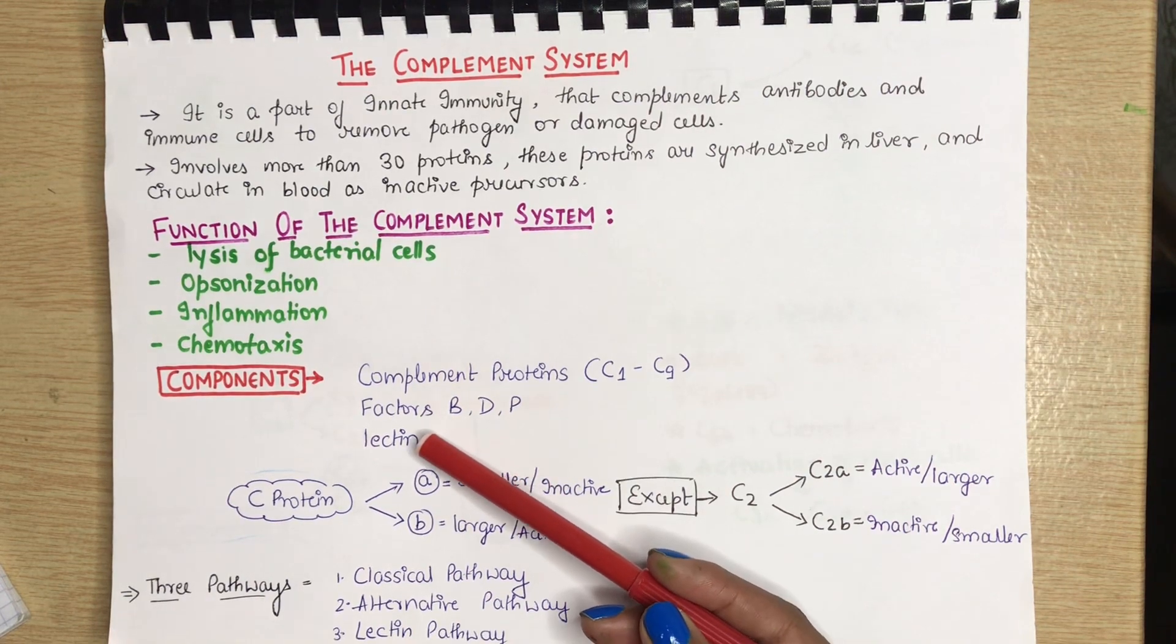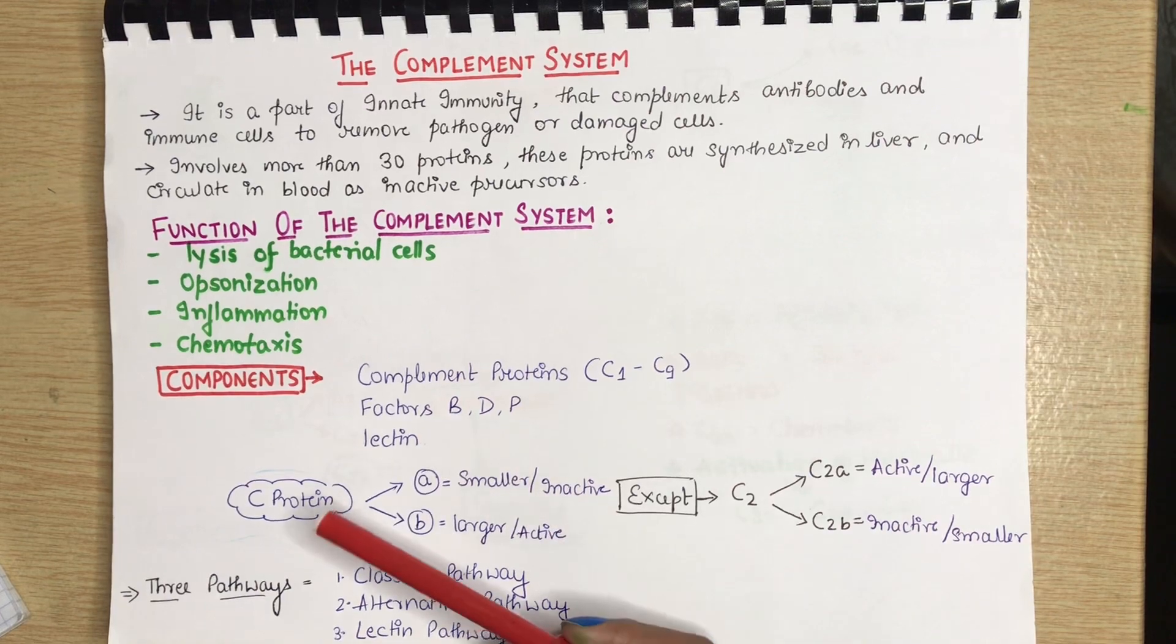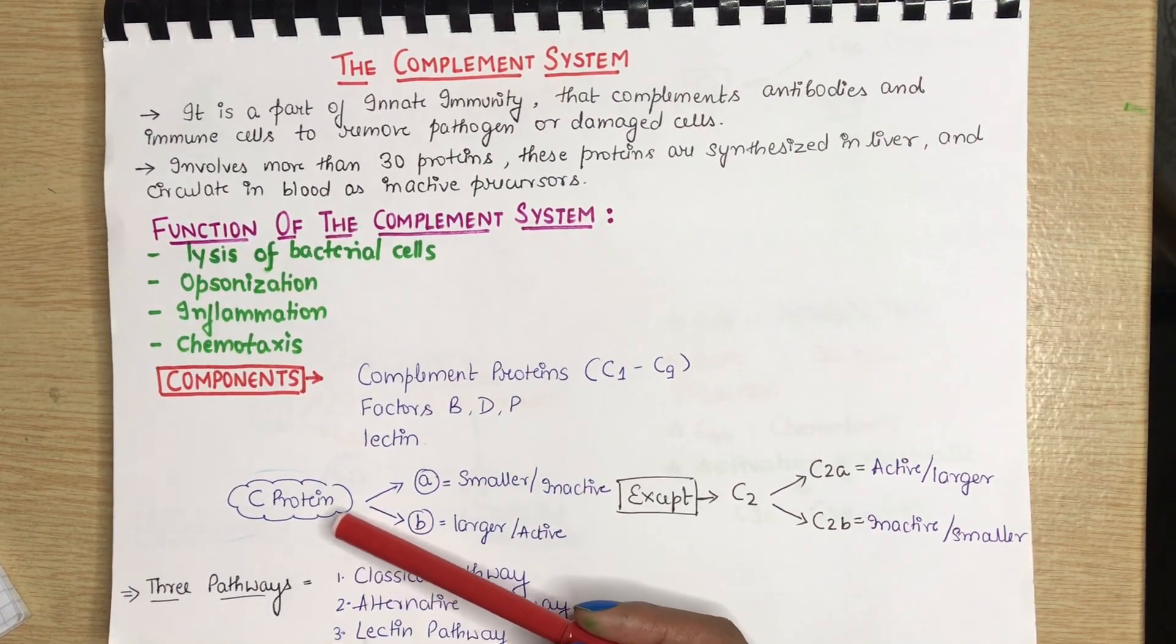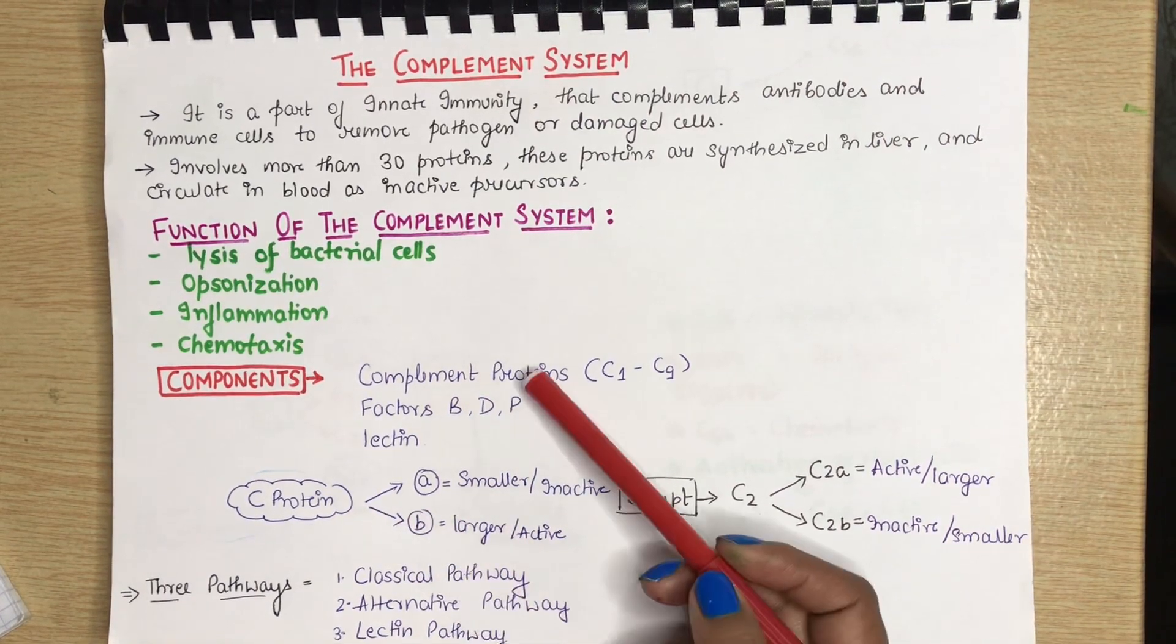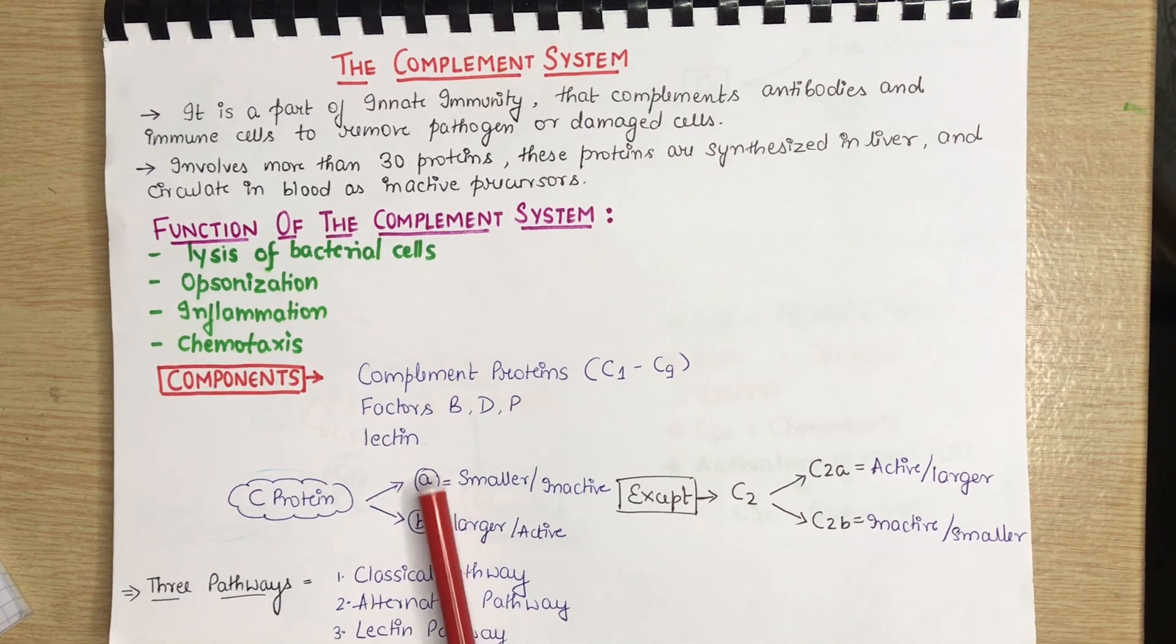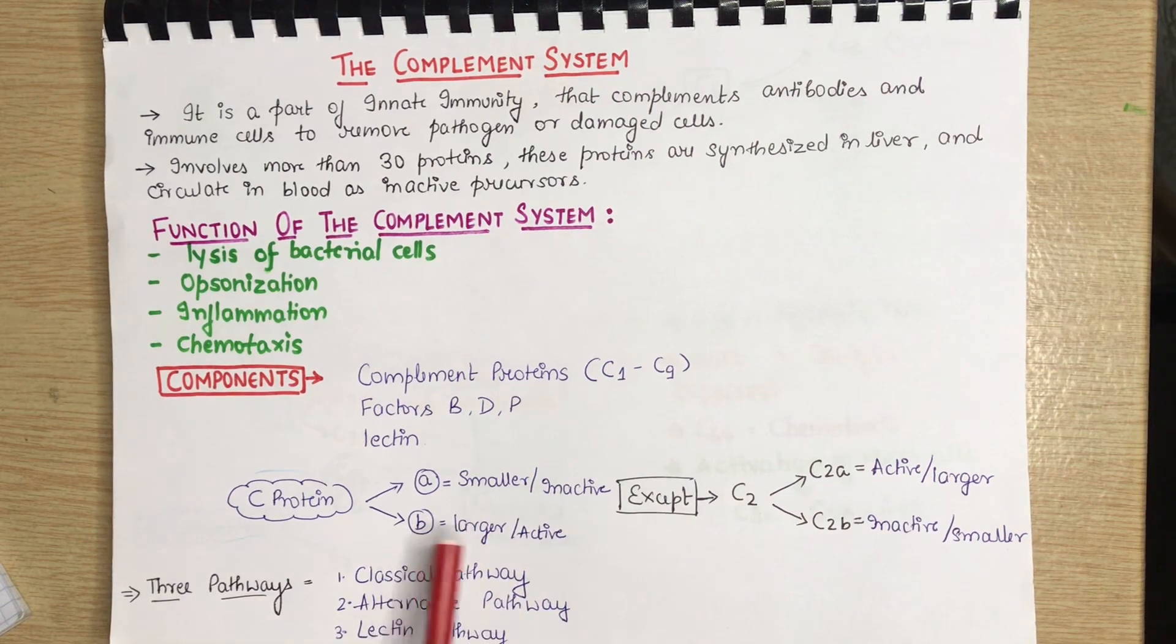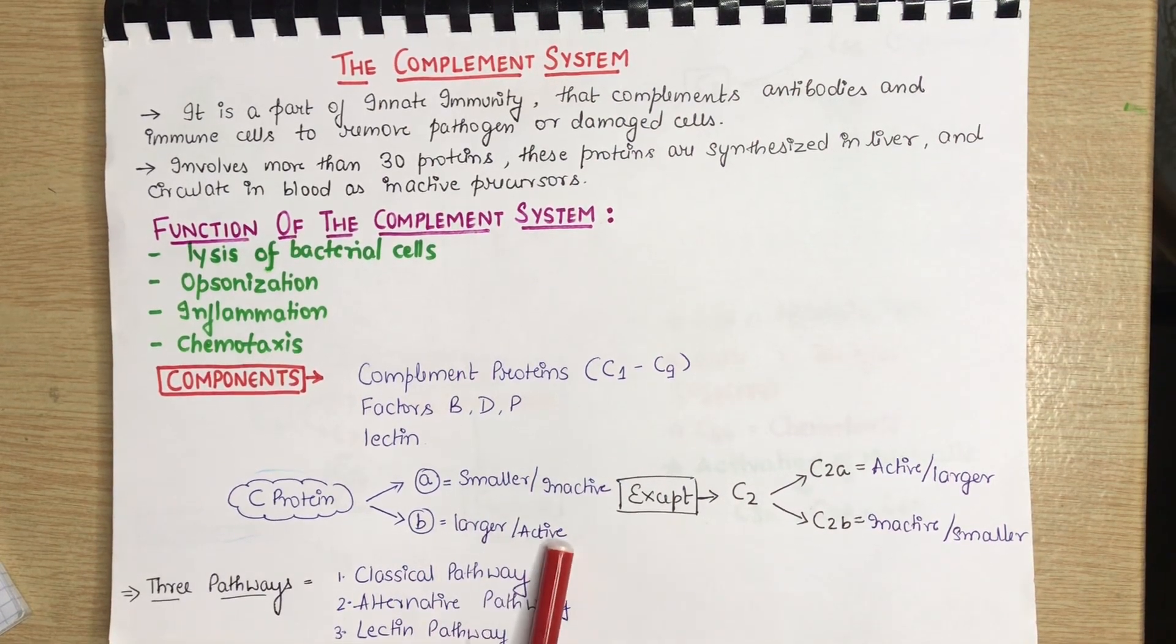Now, before we go further and study about the pathway, I want to give you a basic knowledge about cleavage of the complement protein. So when a complement protein is cleaved, for example, take C1. When C1 is cleaved, it will cleave as C1A and C1B. The A part is always smaller and inactive and the B part is always larger and active.